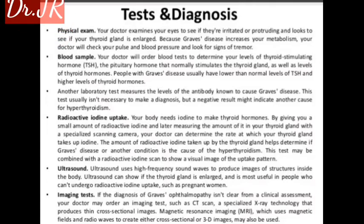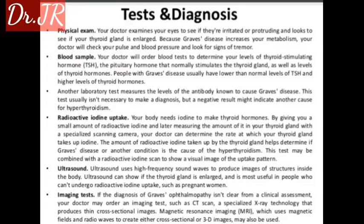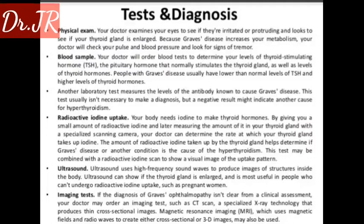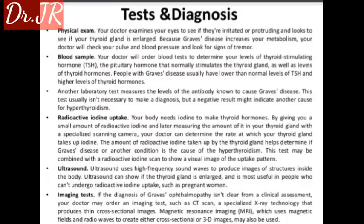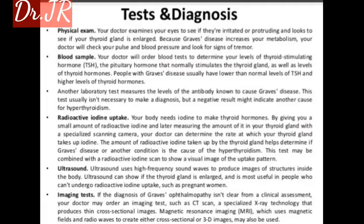Another laboratory test measures the levels of the antibody known to cause Graves' disease. This test usually isn't necessary to make a diagnosis, but negative results might indicate another cause for hyperthyroidism. Radioactive iodine uptake — your body needs iodine to make thyroid hormones. By giving you a small amount of radioactive iodine and later measuring the amount of it in your thyroid gland with a specialized scanning camera, your doctor can determine the rate at which your thyroid gland takes up iodine. The amount taken up helps determine if Graves' disease is the cause of the hyperthyroidism, and this test may be combined with a radioactive iodine scan to see a visual image of the uptake.